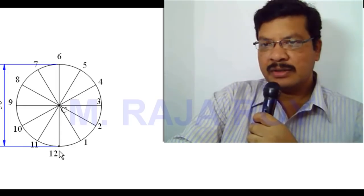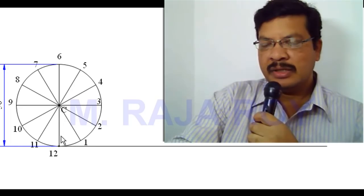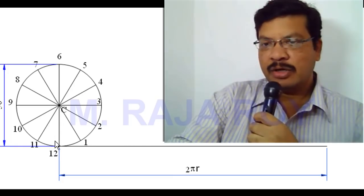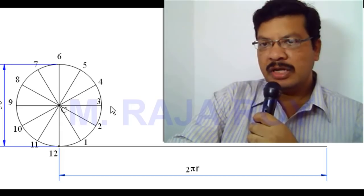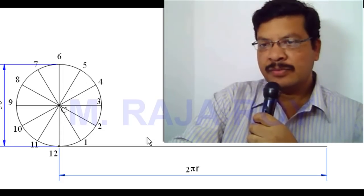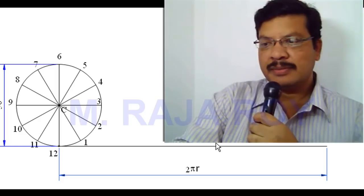The next step is, at the 12th division, draw a tangent to this circle. The length of this tangent line is 2 pi r. With 2 pi r length, you have to draw a tangent at the bottom point. Next, divide this line also into the same number of equal parts which you have considered on this circle. Here, the circle is divided into 12 parts, so divide this line also into 12 parts.